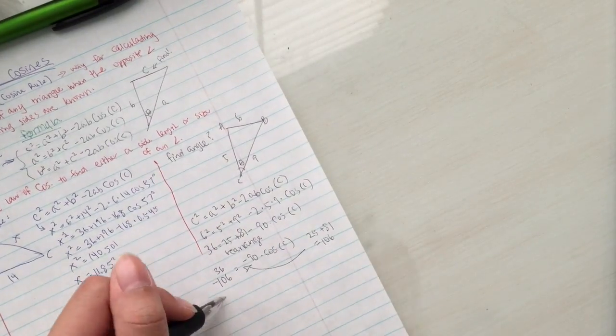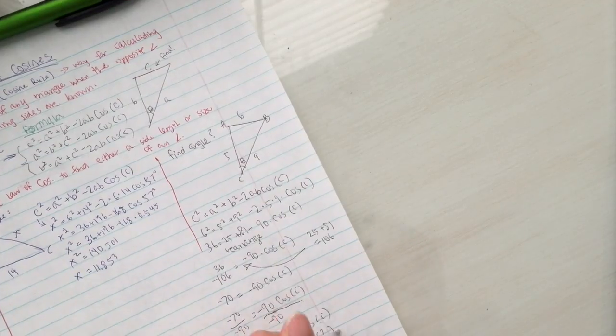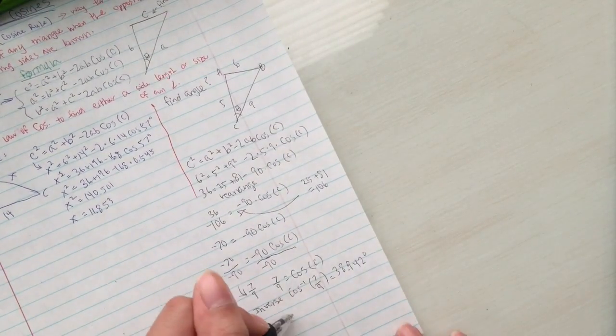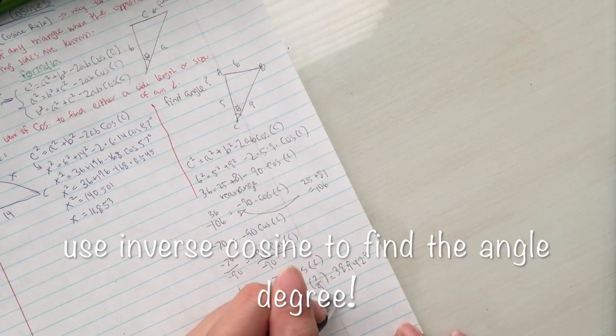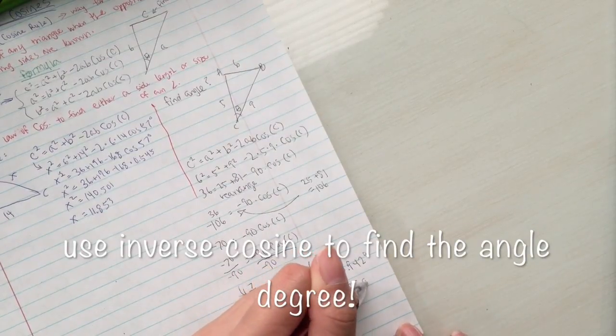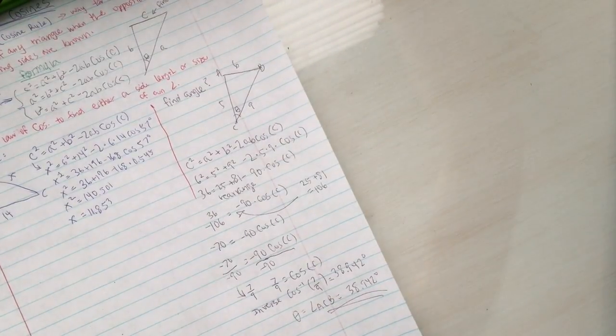...and when you divide negative 90 from each side, you can simplify 70 over 90 to get 7 over 9. 7 over 9 equals cosine of c, and when you use the inverse cosine, inverse cosine of 7 over 9 equals approximately 38.942.